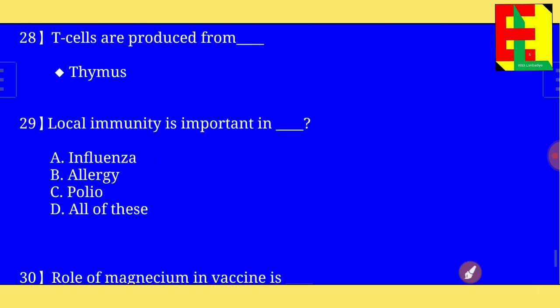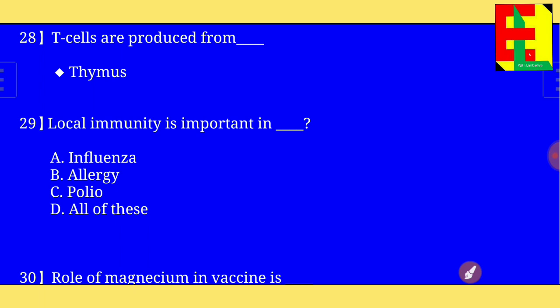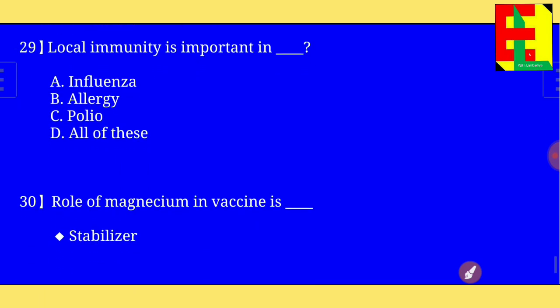Question number twenty-nine: local immunity is important in — the right answer is — local immunity is important in influenza, allergy, and polio — meaning all of these.